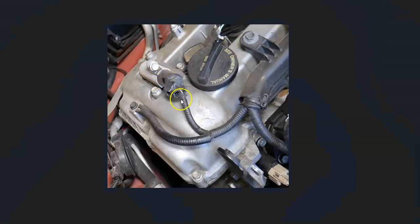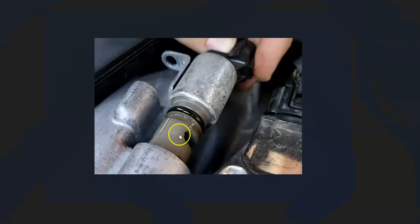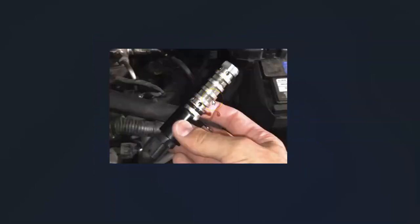One of the first things to check out is going to be the variable valve timing — or variable cam timing — however you want to call it. They're basically little solenoids, and there'll be one located on the intake and one located on the exhaust. They slide in and out, have an electrical connection, and have little holes that oil flows through.